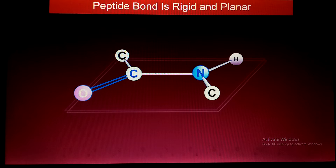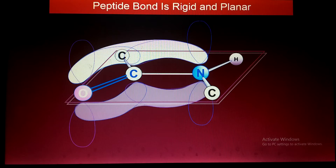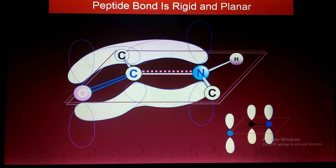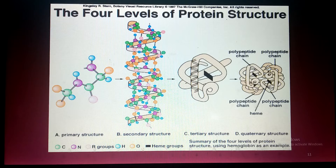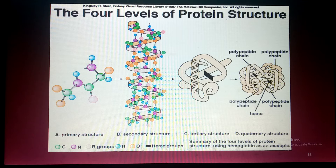The peptide bond is rigid and planar, formed between one carboxylic group and one amino group. There are four levels of protein structure. The first is the primary structure — a linear sequence of amino acids produced at the level of the ribosome. The second is the secondary structure, produced by hydrogen bonding between primary polypeptide chains.